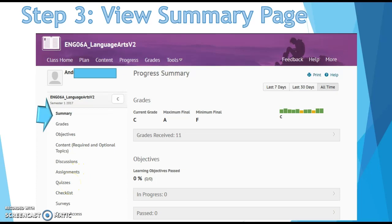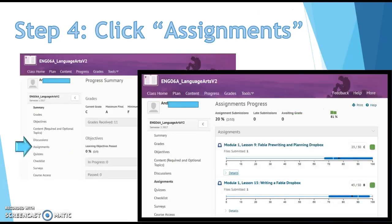If you click on assignments, that'll show you any kind of Dropbox assignment. That's like if you turned in a Word document or a PowerPoint, anything like that. Click assignments inside of the progress tab and it will show you this page. It's kind of just a list of all of the assignments in order. It shows you the obvious part, which is the grade.